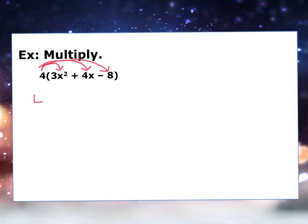When I do that, I'm going to write out the step. It's going to be 4 times 3x squared plus 4 multiplied by 4x minus, because of this minus here, minus 4 multiplied by 8.